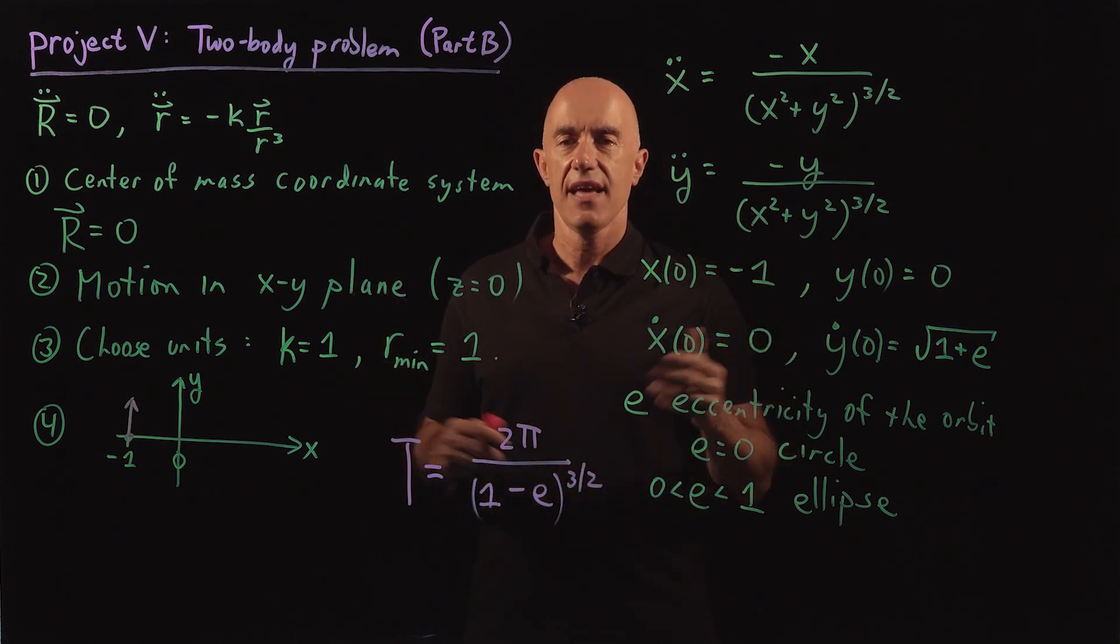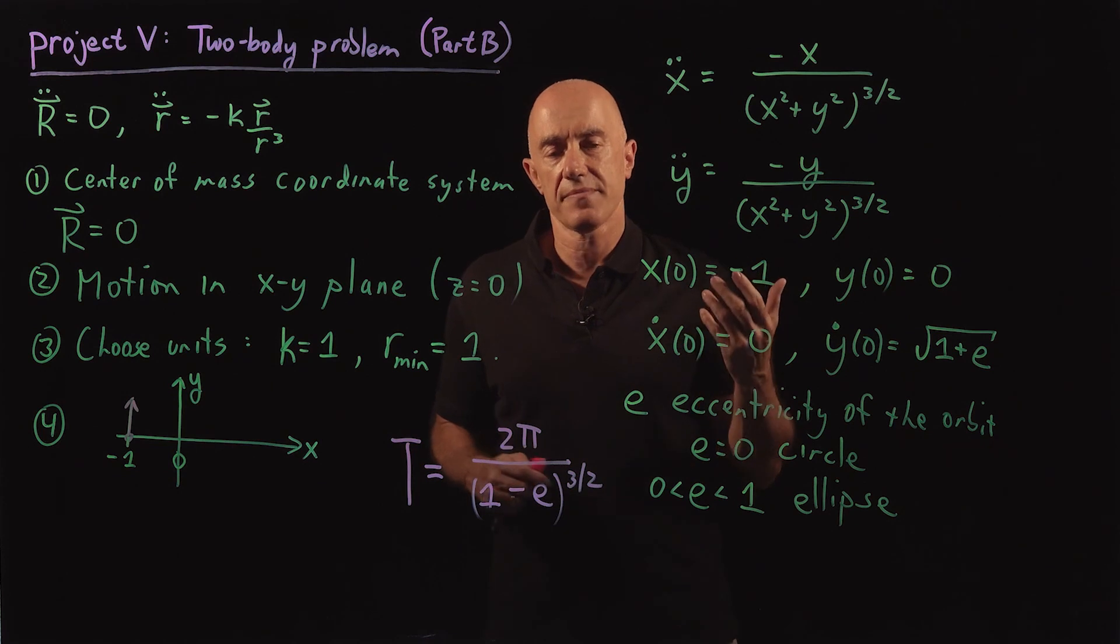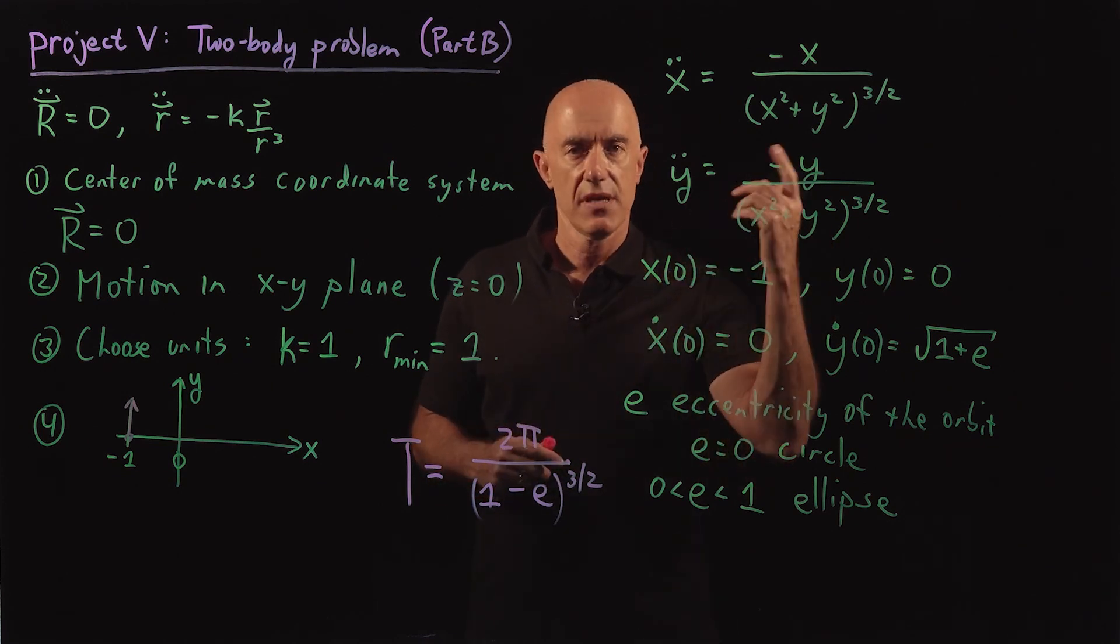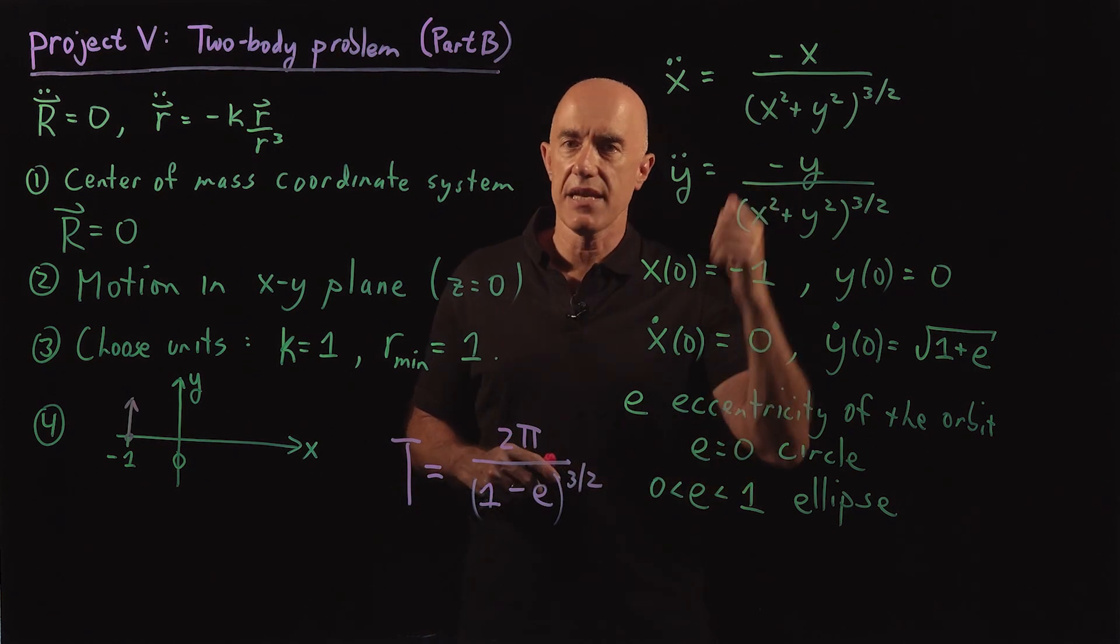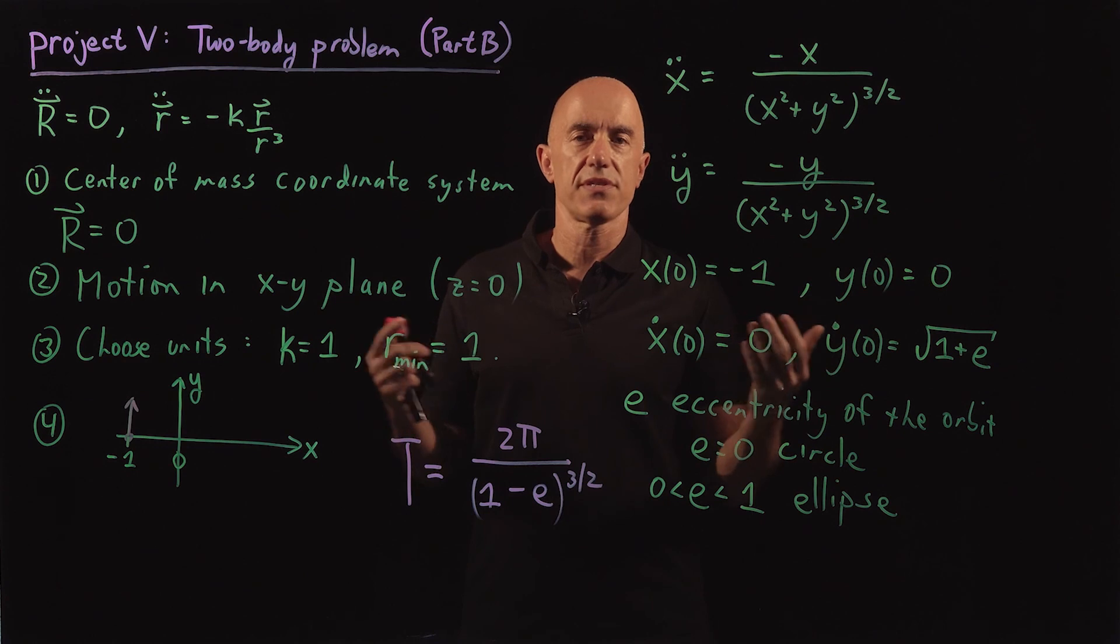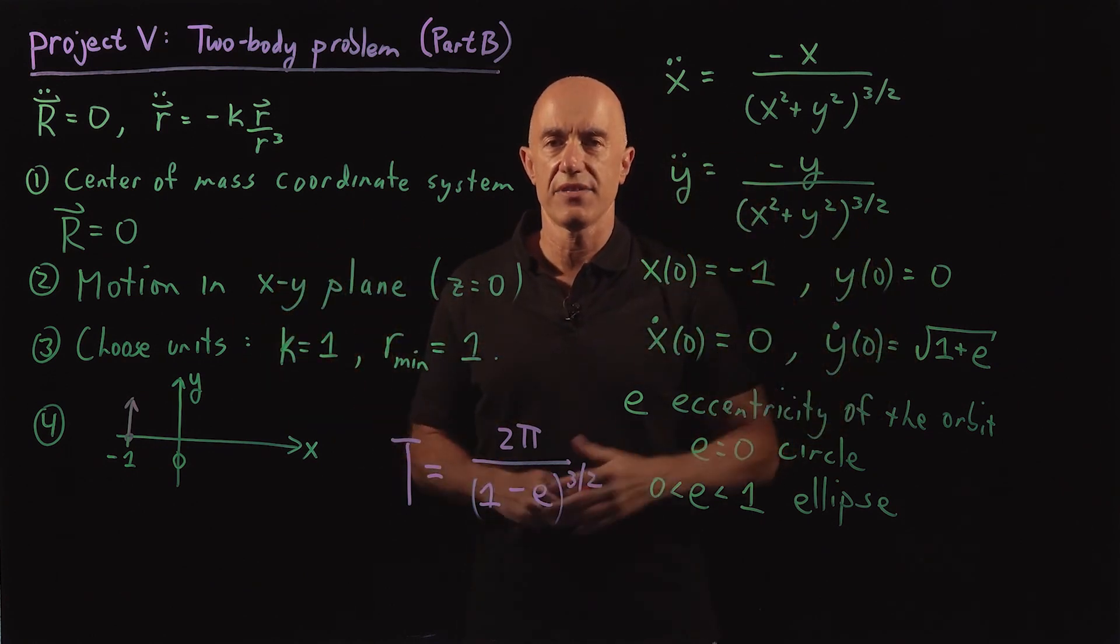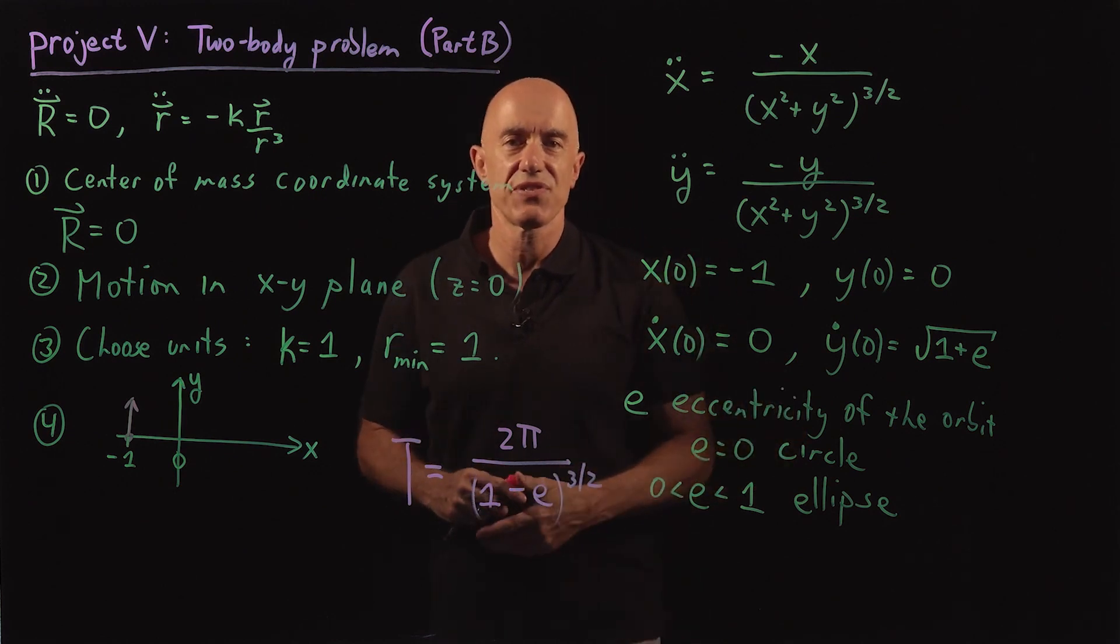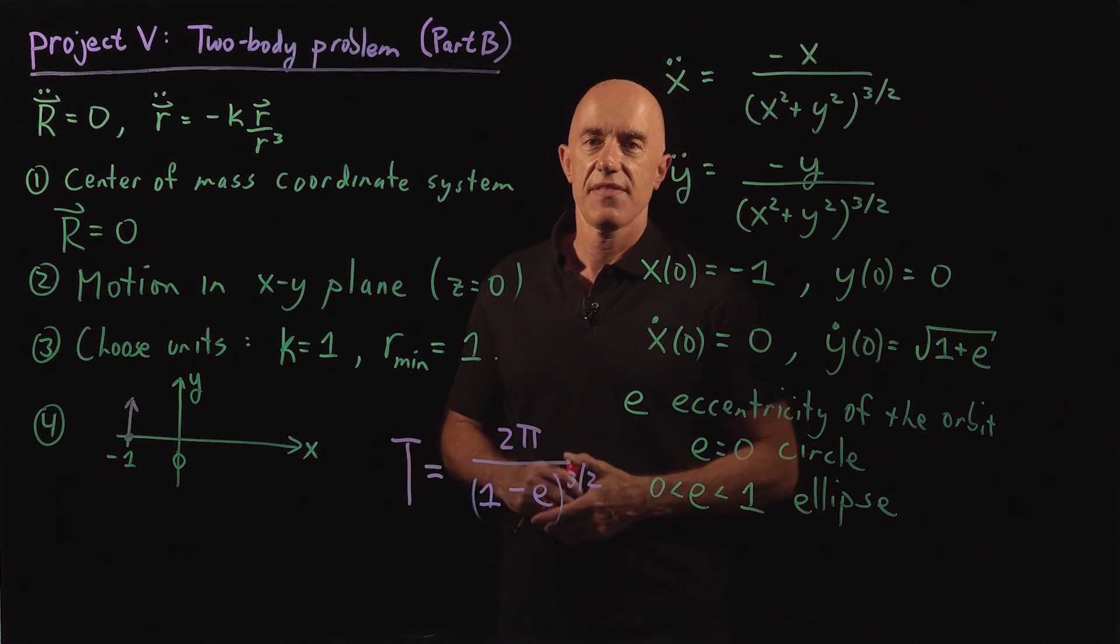The two body problem is the planet and the sun. It's the planet and the moon. Or for instance, you can have some solar system where there are two suns and the two suns orbit around each other. A very interesting physical problem. I'm Jeff Chasnov. Thanks for watching and I'll see you in the next video.